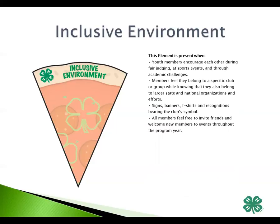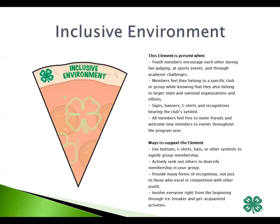We see this element when youth members encourage each other during fairs, sports events, or academic challenges. Members feel they belong to a specific club or group, while knowing that they also belong to a larger state and national organization and its efforts. The signs, banners, t-shirts, and recognition bearing your club's name and symbols, and all members feel free to invite and welcome new members into the group. Ways to support this element: make buttons, t-shirts, hats, or other symbols that signify your group membership; actively seek out others to diversify membership; help provide for many forms of recognition, not just those that excel in competition; and involve everyone right from the beginning through icebreakers and get-acquainted activities.